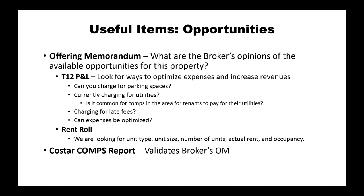While I've discussed the offering memorandum as a broker's opinion of available opportunities — and normally the broker will provide the trailing 12 months and rent roll — we don't always need one. Sometimes you'll interact directly with the property owner. The essential items needed, from either the broker or the owner, are the T12 P&L — trailing 12 months of income and expenses — and the rent roll.